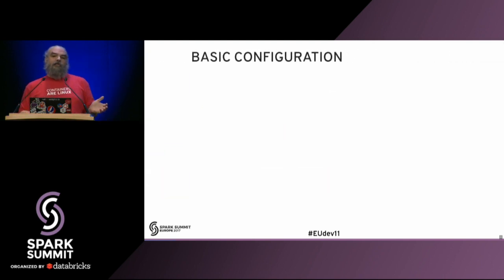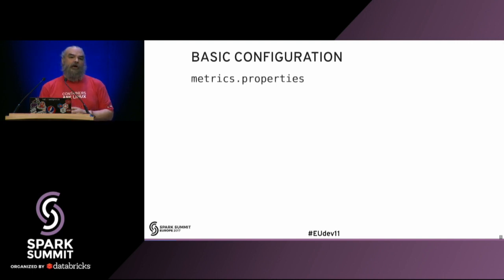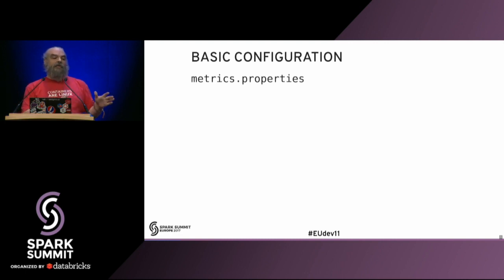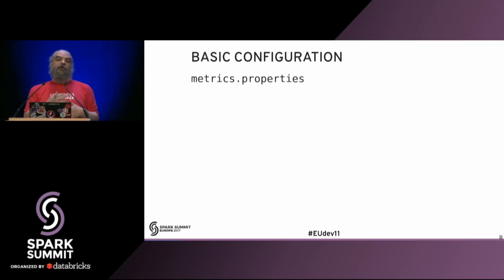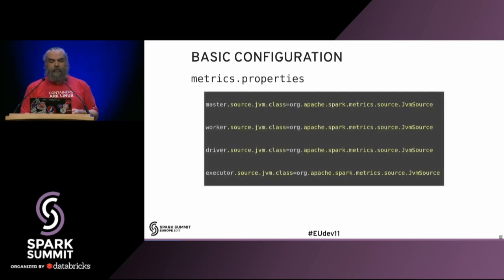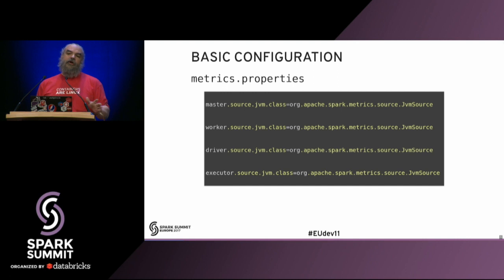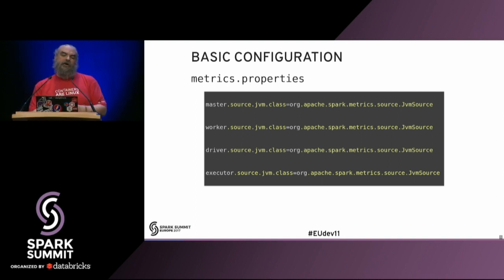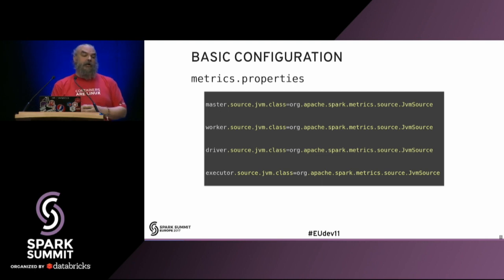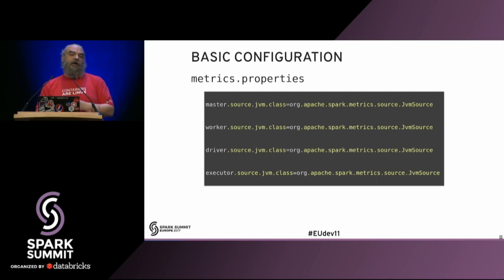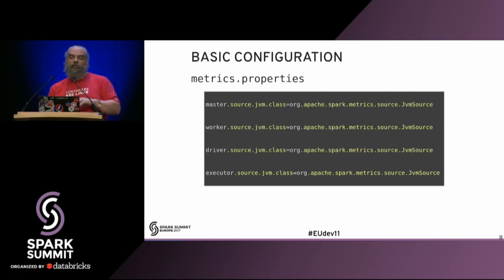There's a base level of configuration when setting this up, and really where this starts is in the metrics.properties file. The Spark developers have put a lot of information in that file - start your exploration there because it's a great documentation tool in addition to the docs website. Without configuring anything, these are some sources you could turn on - the base JVM source. Turning these on lets you see what's happening with the JVM. On the left you see master, worker, driver, executor - you can specify different sources and sinks depending on what process you're looking at.